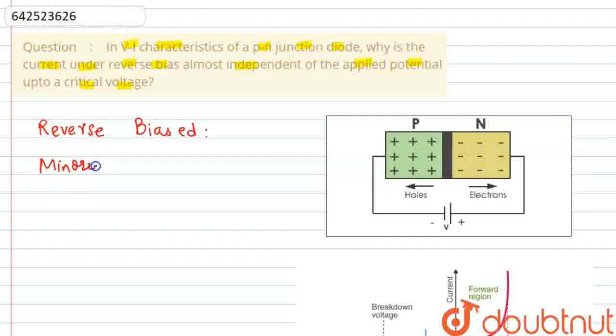Minority charge carriers cause current and it is a very negligible amount of current. We can say that it is of the order of microamps.